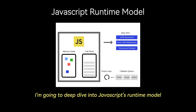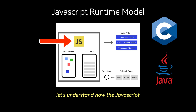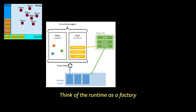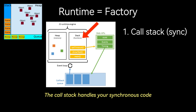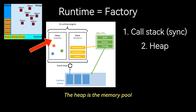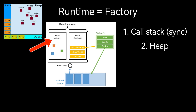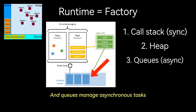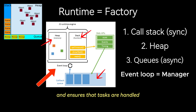I'm going to deep dive into JavaScript's runtime model based on the event loop, which is very different from models in other languages like C and Java. Let's understand how the JavaScript runtime environment works. Think of the runtime as a factory. Inside this factory, three key systems work together: the call stack handles your synchronous code, the heap is the memory pool where objects and dynamically allocated variables or data are stored, and queues manage asynchronous tasks. The event loop is the manager that coordinates these three components and ensures that tasks are handled in the correct order.